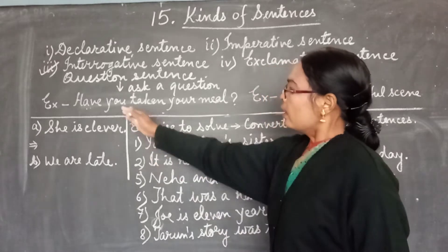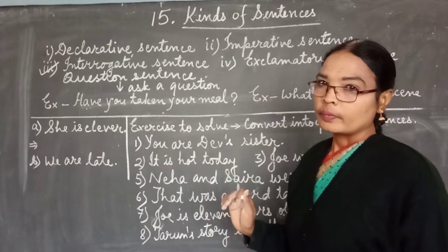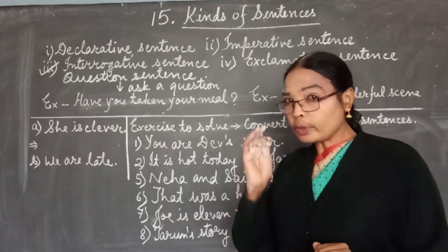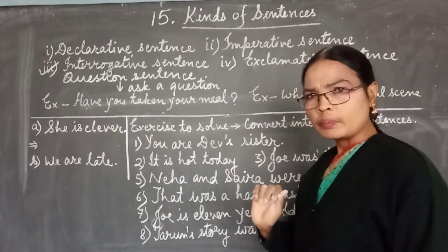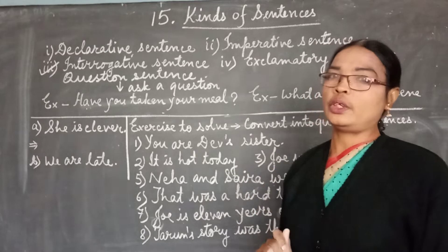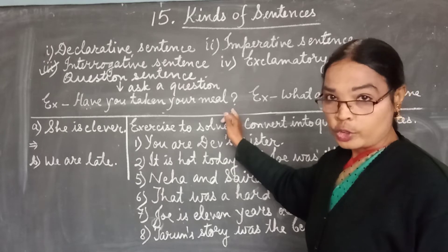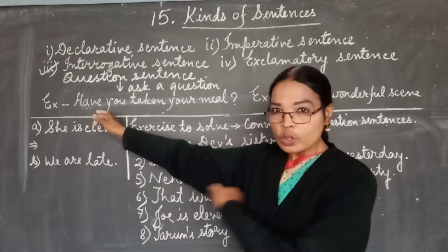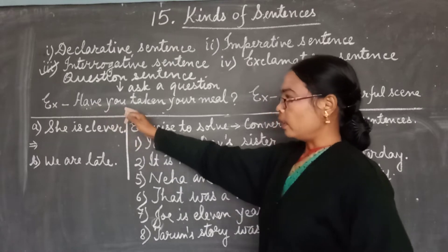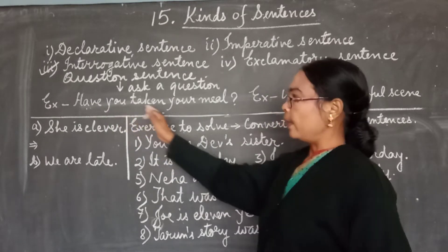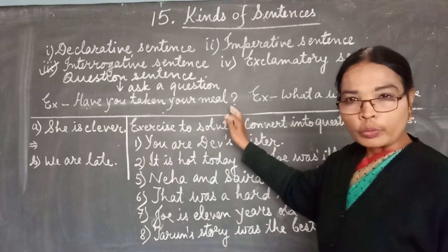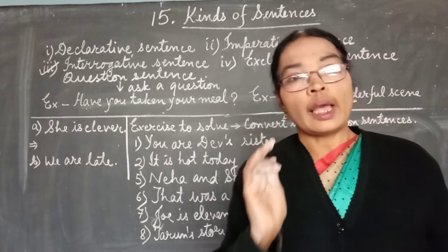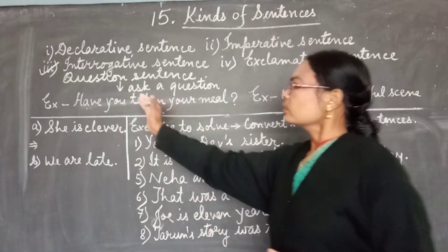Now here's an example: 'Have you taken your heed?' Listen carefully and hear the tone — someone is asking you. At the end we have our question mark. When we start the sentence, the verb comes first, there is no subject at the beginning. The verb 'have' is the first word, followed by the subject, and at the end of the sentence we put a question mark. If we do not put a question mark, that sentence will not be called an interrogative or question sentence.